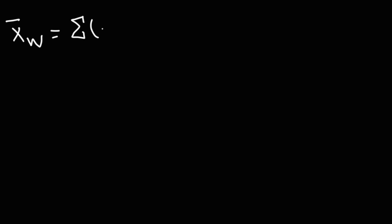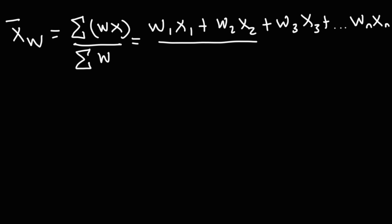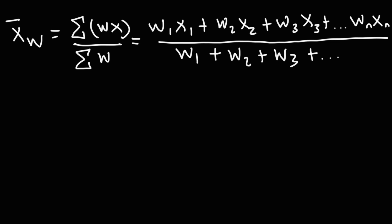The weighted mean is the sum of the products of each weight and data point (w times x) divided by the sum of the weights. In expanded form: (w1·x1 + w2·x2 + w3·x3 + … + wn·xn) divided by (w1 + w2 + w3 + … + wn).